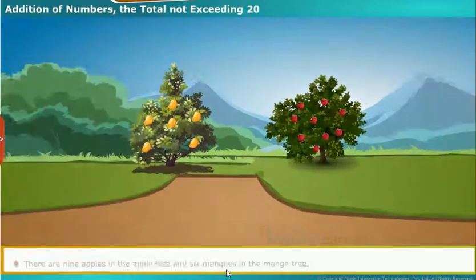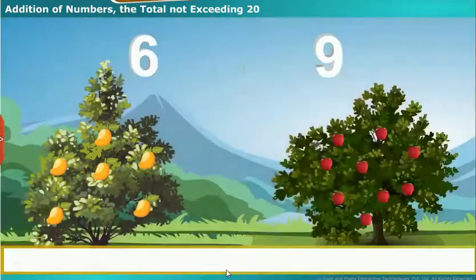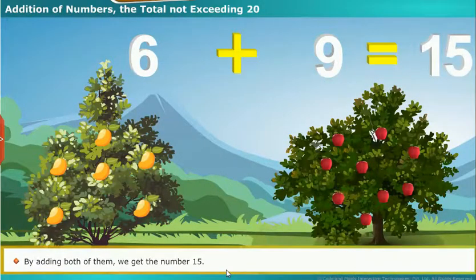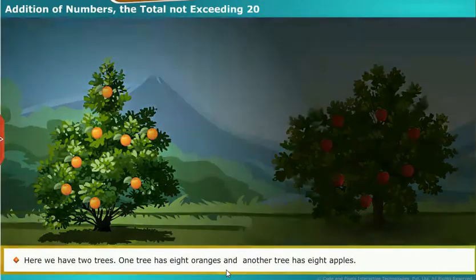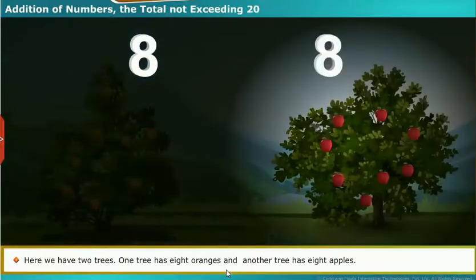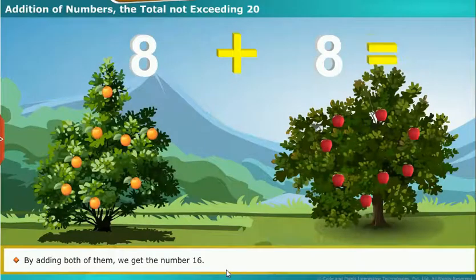Addition of numbers, the total not exceeding 20. There are nine apples in the apple tree and six mangoes in the mango tree. By adding both of them we get the number 15. Here we have two trees. One tree has eight oranges and the other tree has eight apples. By adding both of them we get the